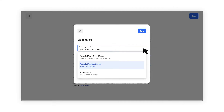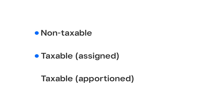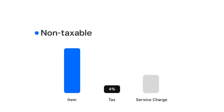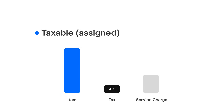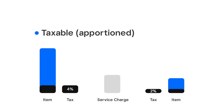You have three options: non-taxable, tax assigned, and tax apportioned. Non-taxable means your service charge will not be taxed. Tax assigned means your service charge is taxable and the entire service charge will be taxed at the assigned rate. Tax apportioned means the service charge will inherit the tax rate from the items in the cart.